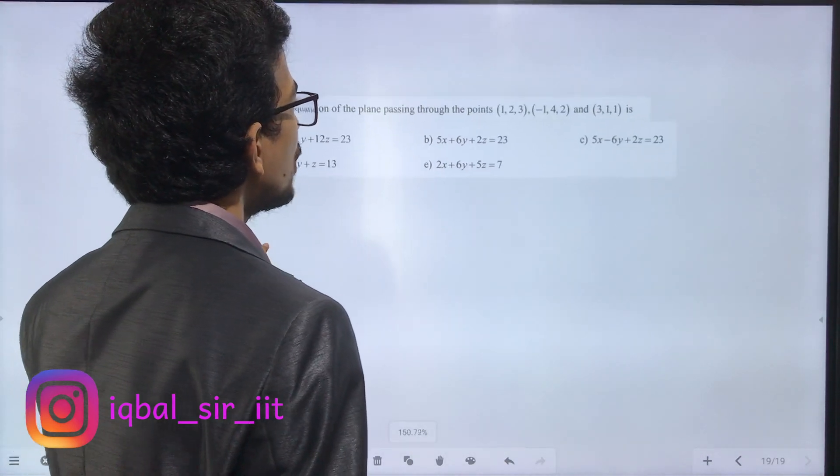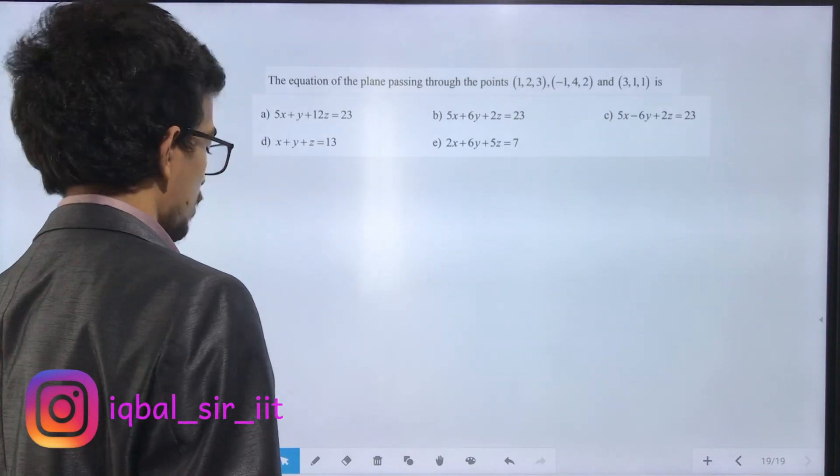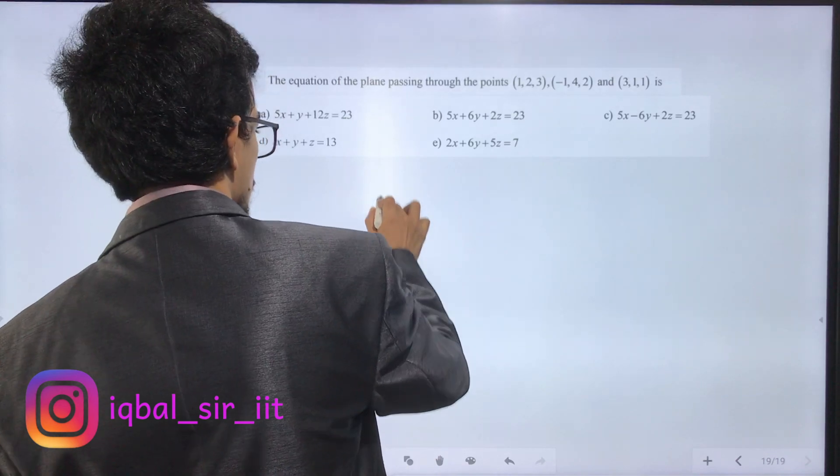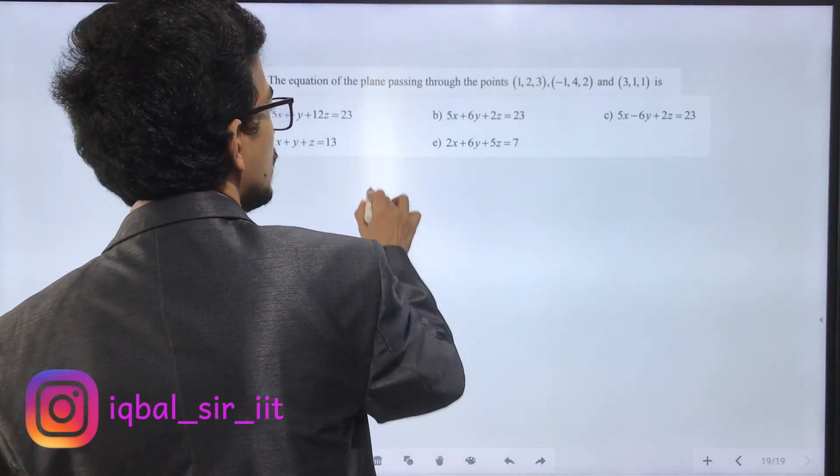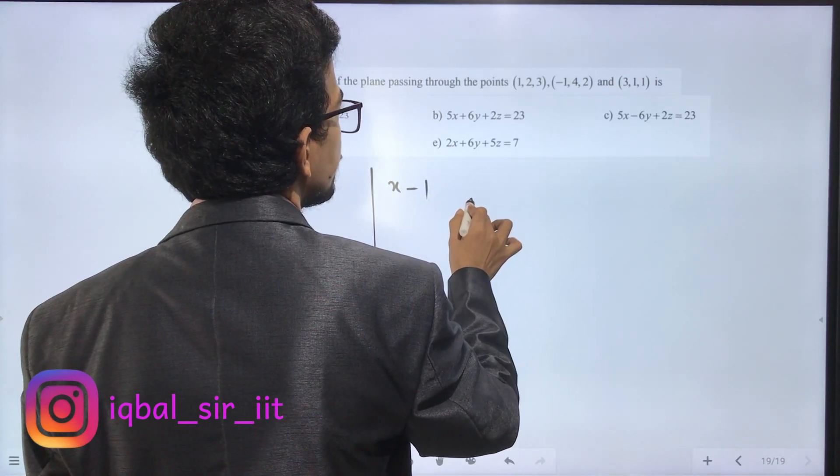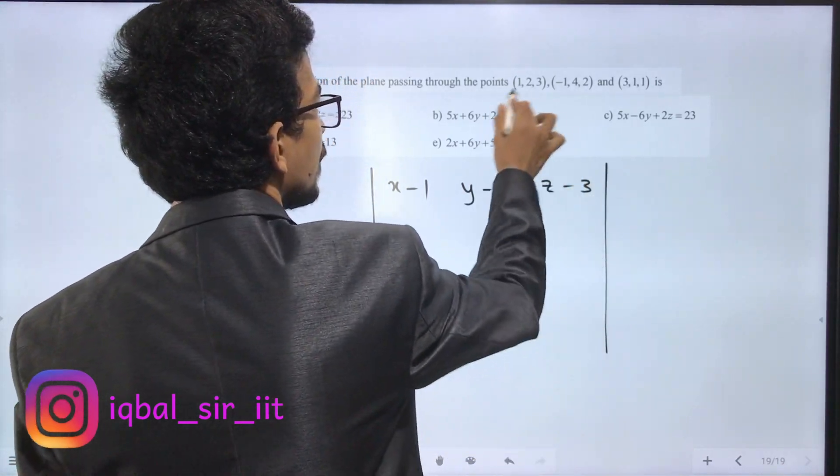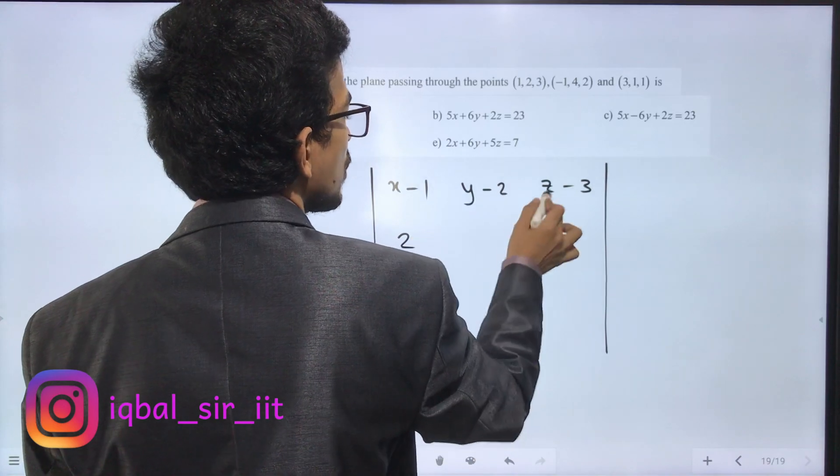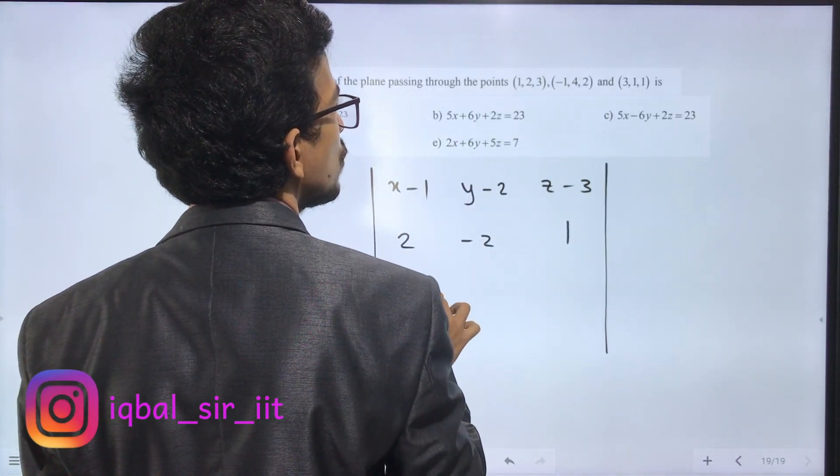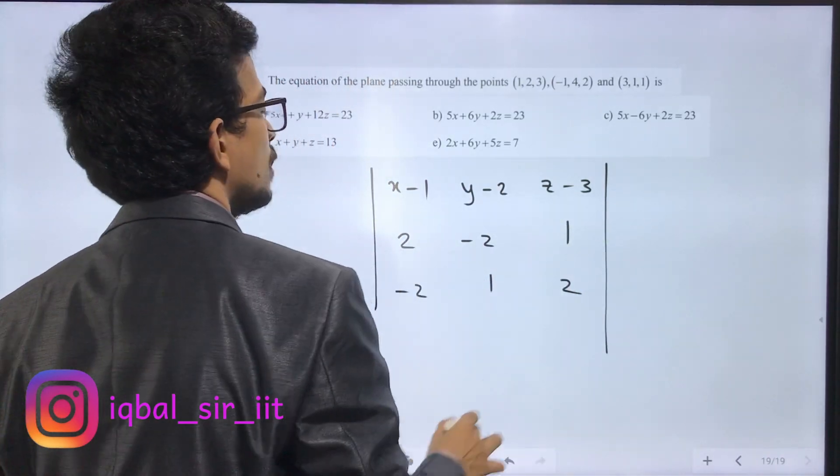Problem 90: equation of the plane passing through the points (1,2,1), (-1,4,1), and (3,1,1). If we are passing through 3 points, we use the determinant method directly. The determinant with [x-1, y-2, z-3], [-1-1, 4-2, 1-1], [3-1, 1-2, 1-3] equals 0.